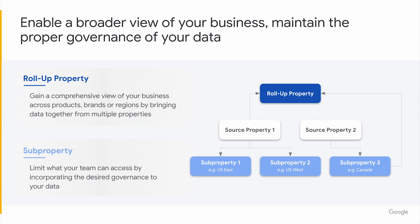This slide can help you understand a very typical case of how sub-properties and roll-ups are used today. We have a couple of source properties — in this example two — where there's reason to break information out by region. For source property one, it's broken out into U.S. East and U.S. West. For source property two, the Canada region is broken out specifically. Then all of that data is rolled up into a global property. The U.S. East team focuses on U.S. East data without distraction from U.S. West data; same for the Canada sub-property. The roll-up brings all data together for global marketing teams to action across regions and run more comprehensive campaigns.